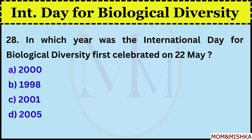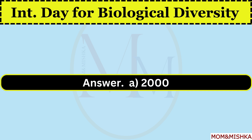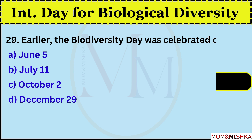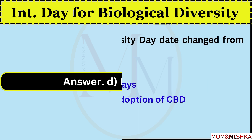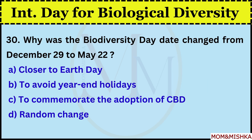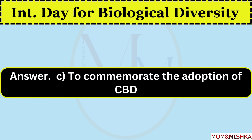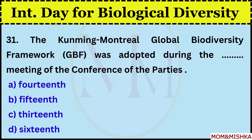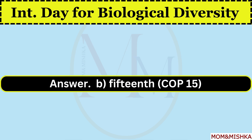In which year was the International Day for Biological Diversity first celebrated on 22nd May? In year 2000, option A. Earlier, the Biodiversity Day was celebrated on 29 December, option D. Why was the Biodiversity Day date changed from 29 December to 22nd May? To commemorate the adoption of CBD, option C. The Kunming-Montreal Global Biodiversity Framework was adopted during the meeting of the Conference of the Parties — 15th COP 15, option B.